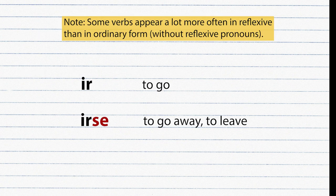Many verbs have both reflexive and ordinary forms, but some appear much more often in reflexive form and the meaning can differ depending on the form. For example: 'ir' means to go, while 'irse' in reflexive form means to go away or to leave.